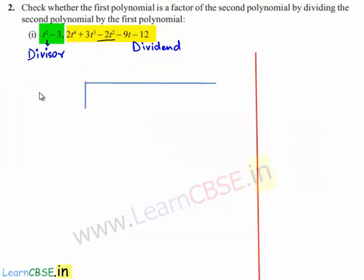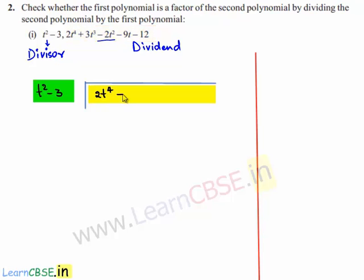The divisor, which is t² minus 3, can be written here, and the dividend, which is 2t⁴ plus 3t³ minus 2t² minus 9t minus 12, can be written here.